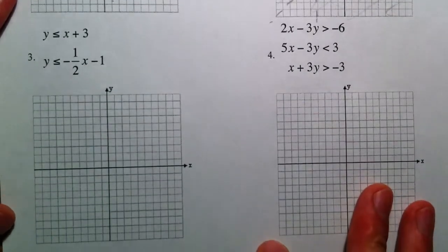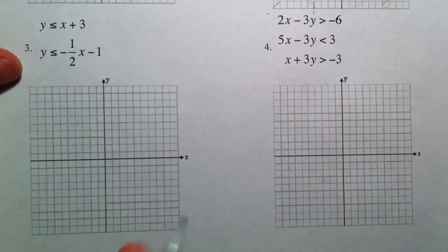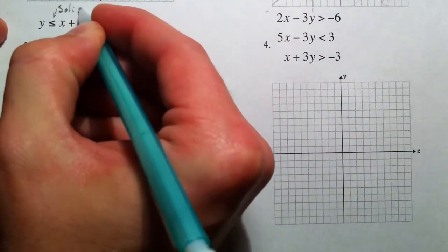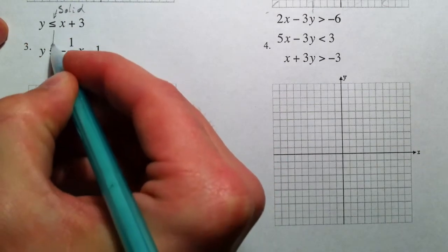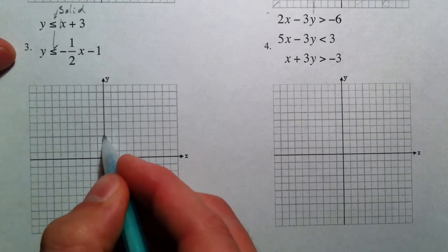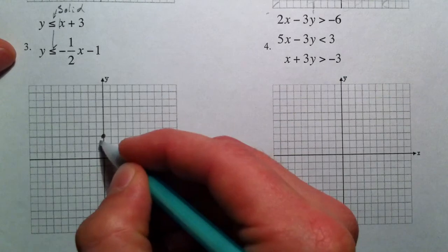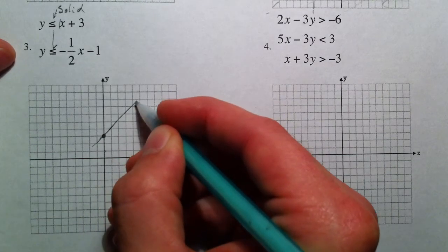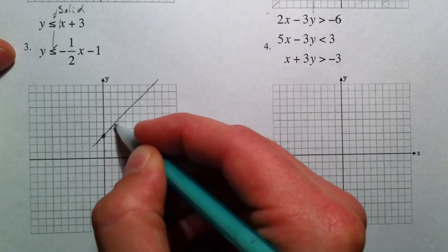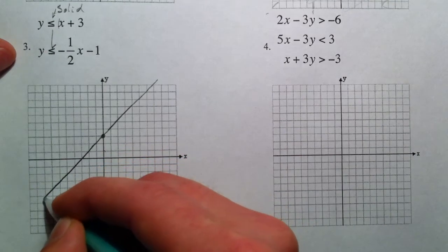You guys are welcome to try out these next couple. If you want to, pause the video. Try them out yourself. Again, this is solid. Along with this one. Slope is 1, Y-intercept is 3. Up 1 over 1, up 1 over 1. Down 1 over 1. And all the way down there.